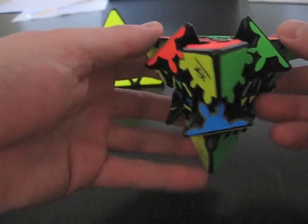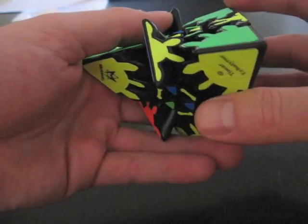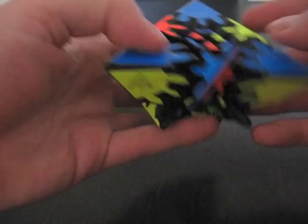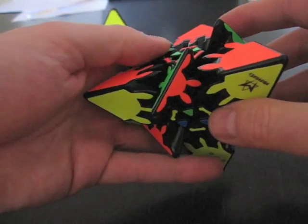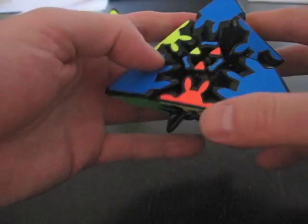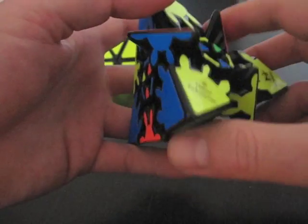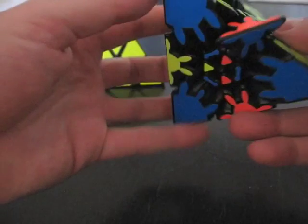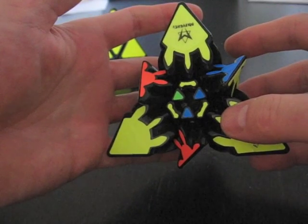Corners placed. Now, next is to place edges in their correct position, which is automatically going to recover the tetrahedral shape of the puzzle. Let's do one side. Let's start, for example, with the yellow side.